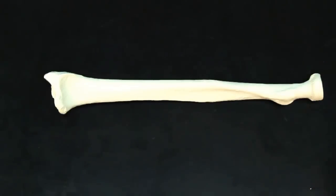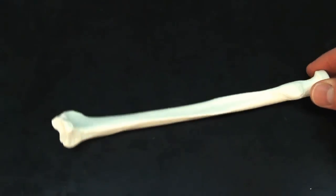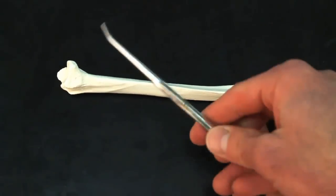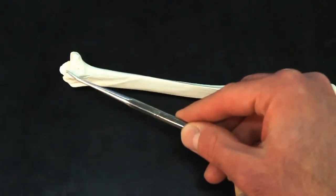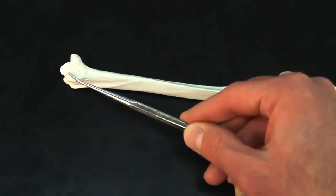Well, since we had a radial notch on the ulna, we should have an ulnar notch on the radius. This smoothish portion right here, that is going to be the ulnar notch.